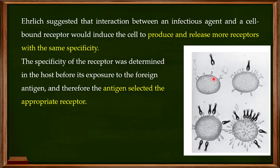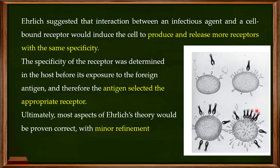The specificity of the receptor was determined in the host before exposure to the foreign antigen. The antigen selects the appropriate receptor — it is not the receptor selecting the antigen, but the antigen selecting the receptor. Once the antigen has selected the receptor, the cell produces a large number of those specific receptors on its surface to neutralize that particular antigen.